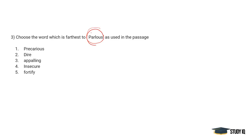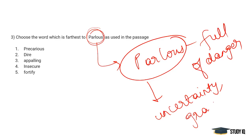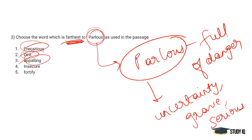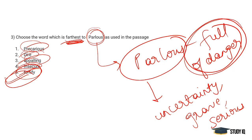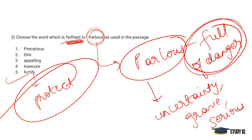Choose a word farthest from 'parlous.' Parlous means full of danger — synonyms include grave, serious, and uncertainty. Precarious is almost the same. Dire means serious concern. Appalling means insecure. Fortify means to protect someone. Since parlous describes a state of danger and fortify means to protect, fortify is the antonym. The farthest in meaning from parlous is 'fortify.'